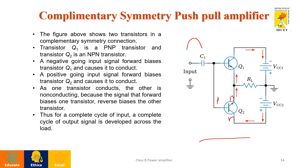So transistor Q2 (NPN) is forward biased and tries to conduct during the positive half cycle. In the negative half cycle, the PNP transistor is forward biased and conducts, providing the output from that transistor. Finally, the combination of both transistors gives you the complete output cycle.